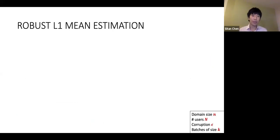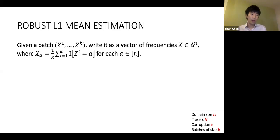The starting point for this theorem and all theorems in this work is the observation that you can cast the problem of learning from untrusted batches as a problem of robust mean estimation. Rather than thinking of getting batches z1 through zk, where each z_i is an element in the domain, we can instead regard this batch as a vector of frequencies X, where the a-th entry of X is the empirical frequency of element a among z1 through zk.